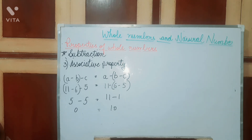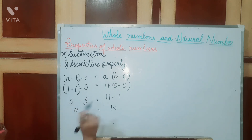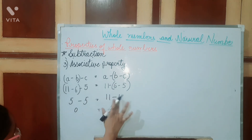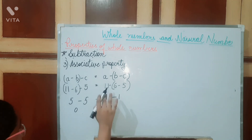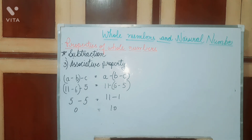Let me explain once again. Here, 11 minus 6 — first we solve the bracket — 11 minus 6 is 5. Then on the other side, 6 minus 5 first gives 1, and 11 minus 1 is 10. So 5 minus 5 is 0 and 11 minus 1 is 10 — the answers are different. So associative property does not hold for subtraction.